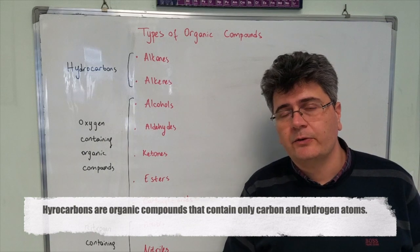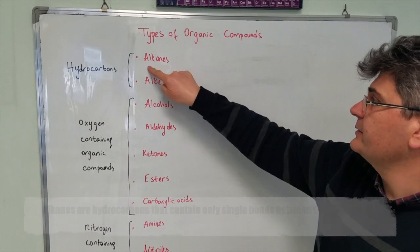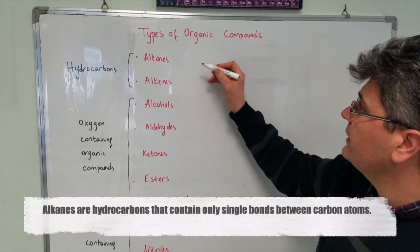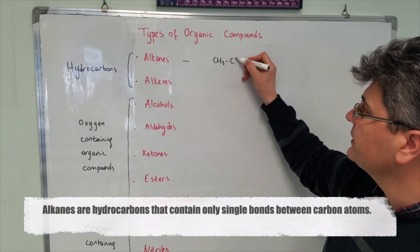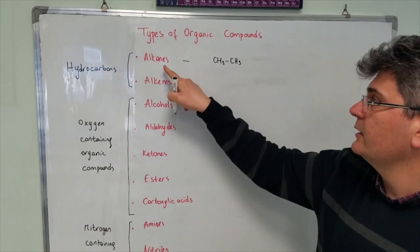Hydrocarbons are the compounds that contain only carbon and hydrogen. The first family is alkanes. Alkanes are the hydrocarbons which contain only single bonds. For example, CH3-CH3. Ethane is an example for alkanes.